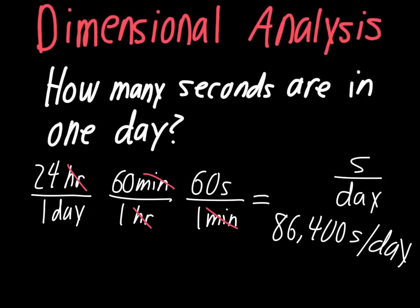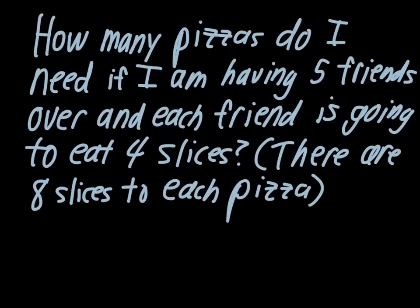We'll take a look at one for the next example that's a little bit more complex, but maybe also a little bit more practical. In this example, you're trying to figure out how many pizzas you need if you're having five friends over, and each friend is going to eat four slices of pizza. I added an extra little piece of information for you. There's eight slices to each pizza.